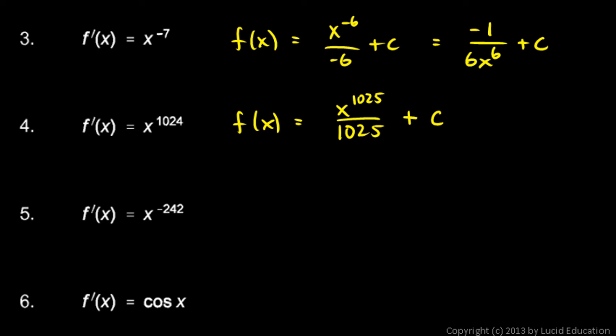Number 5, f of x is x to the negative 242, or f-primed - the derivative is x to the negative 242, so f of x is x to the negative 241 over negative 241, plus c. We raise the exponent by 1, and then divide by the new exponent.